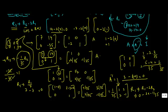Therefore, A-inverse is equal to (1/35) times the matrix [1, 2; 2, -1]. It's a little complicated and may be confusing at times, but as you practice more, this will become easier and easier.